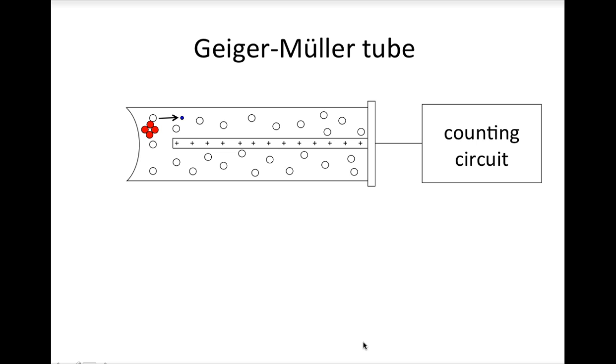That electron is negatively charged and is attracted to the positively charged plate. So in effect, this free electron produces a current that is registered by the counting circuit. By counting the number of emissions collected in the tube, the GM tube indicates the number of decays that occur.